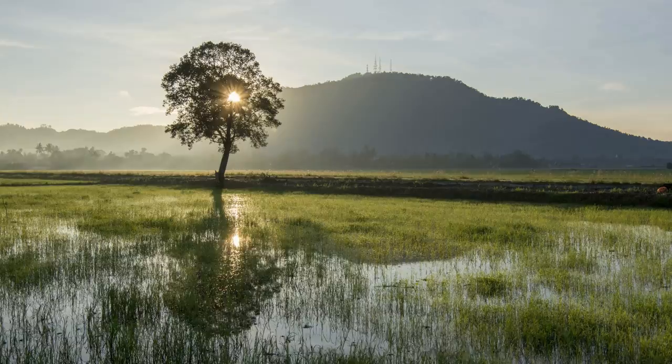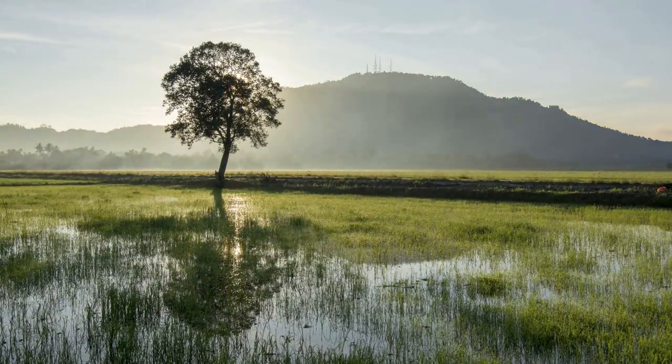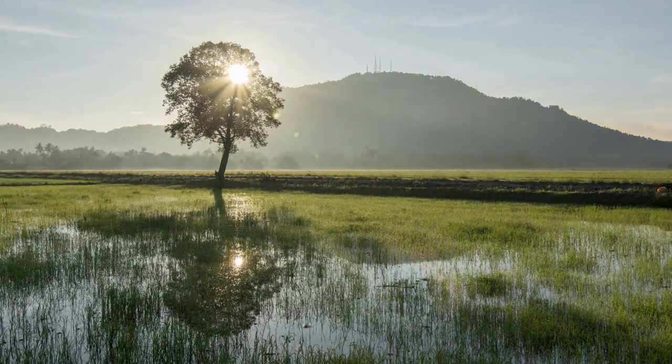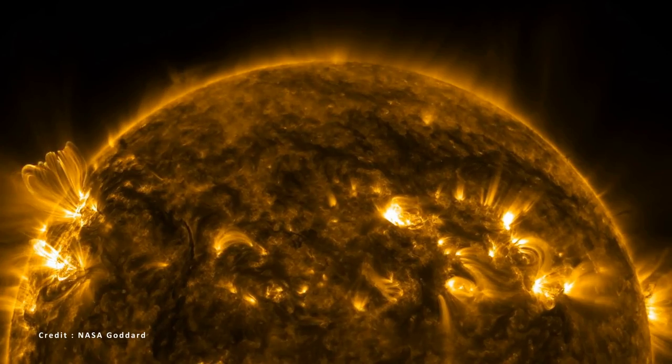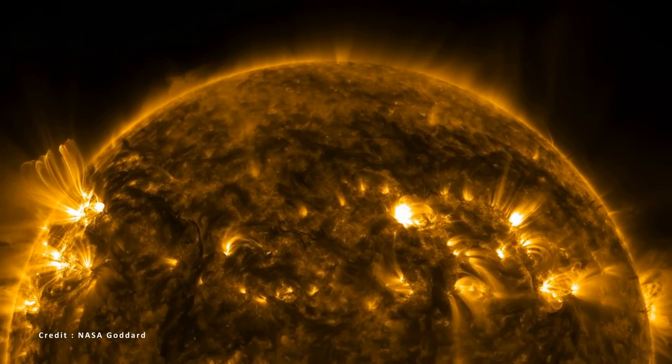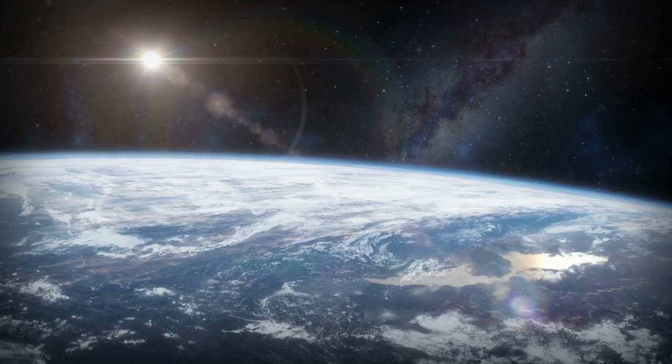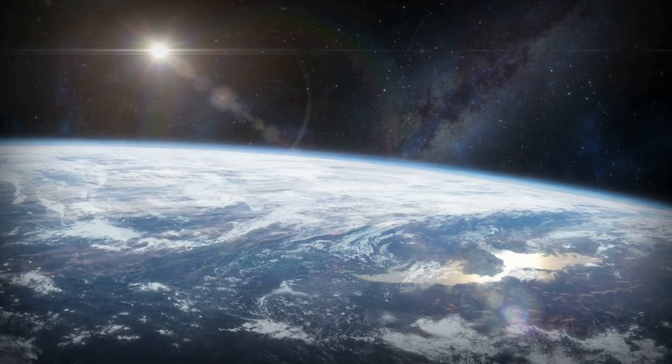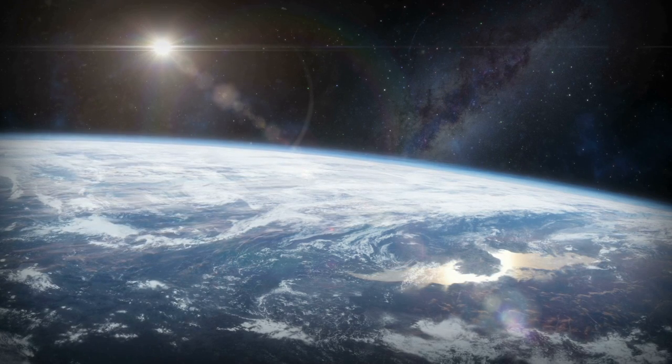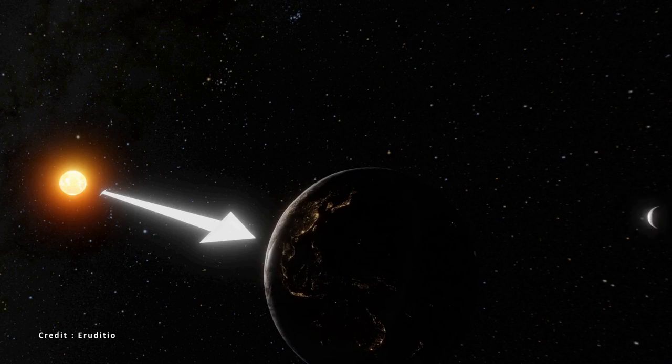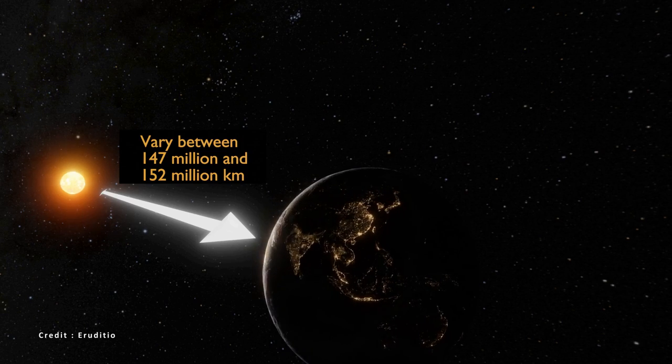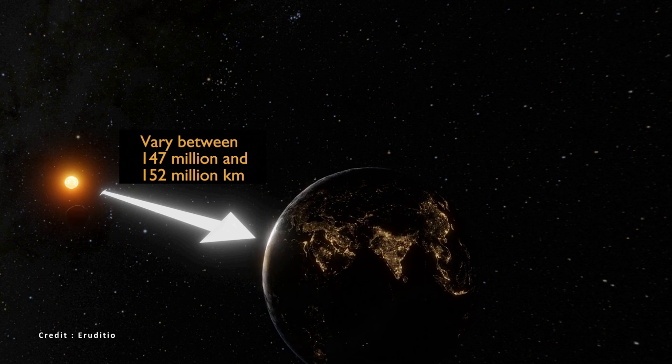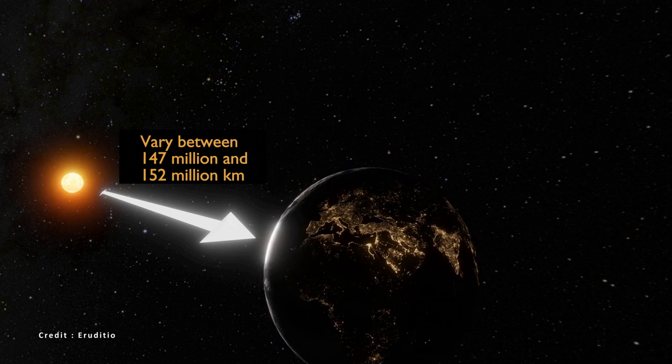Before trying to understand what causes temperatures to rise, let's first look at what causes natural climate changes. It all starts with the Sun, which is our planet's main source of energy. Earth revolves around the Sun and completes its orbit in one year. But its orbit is not constant. Between the nearest and the farthest point, the variation in distance is measured in millions of kilometers. The closer the Earth is to the Sun, the higher Earth's average temperatures are.